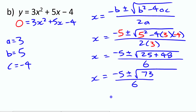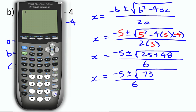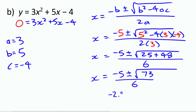To get decimal approximations I'll use a calculator. For the minus case: (negative 5 minus √73) / 6 gives one value, and for the plus case: (negative 5 plus √73) / 6 gives the other. The two approximate answers are x ≈ negative 2.26 and x ≈ 0.59. Since these are approximations, we write approximately equal to.